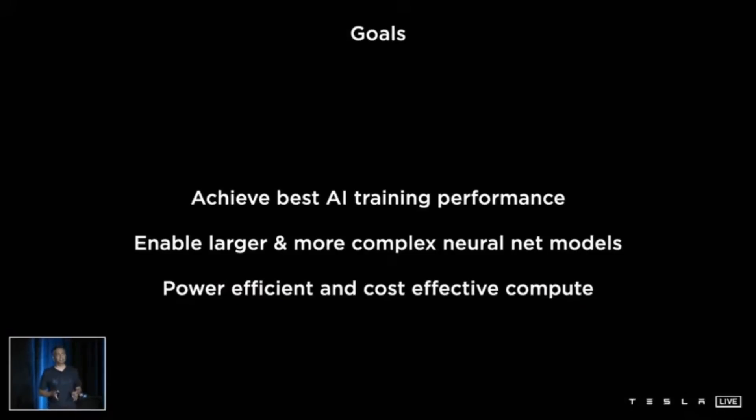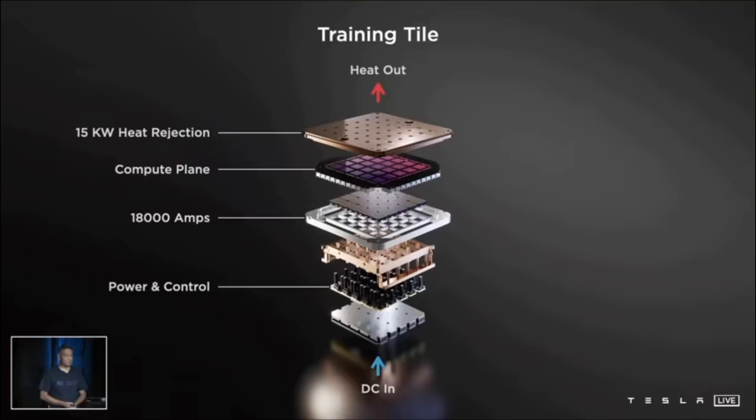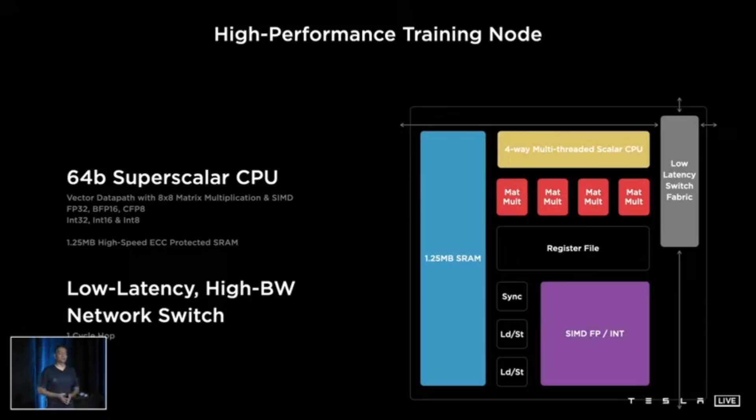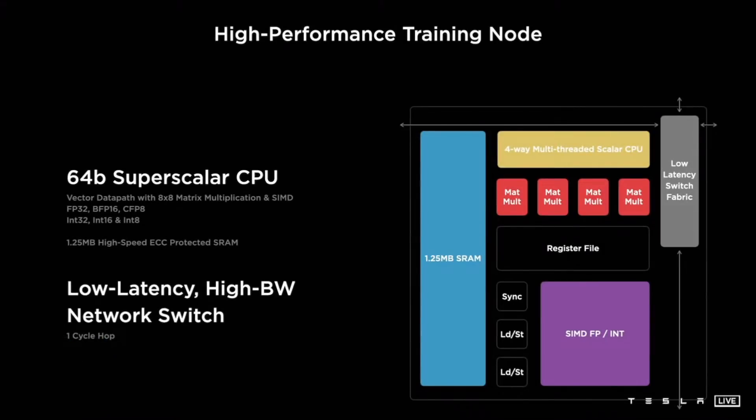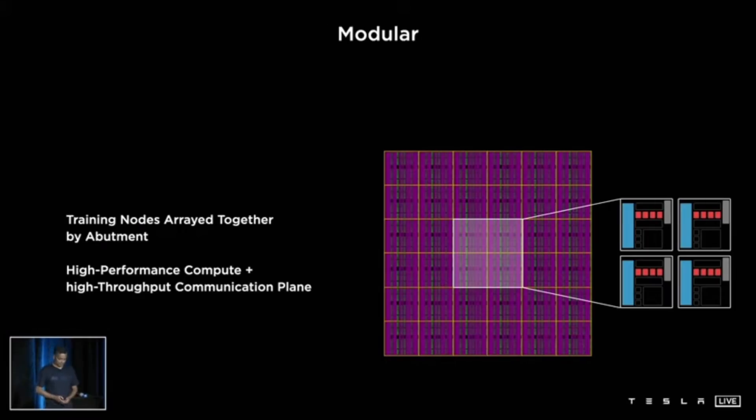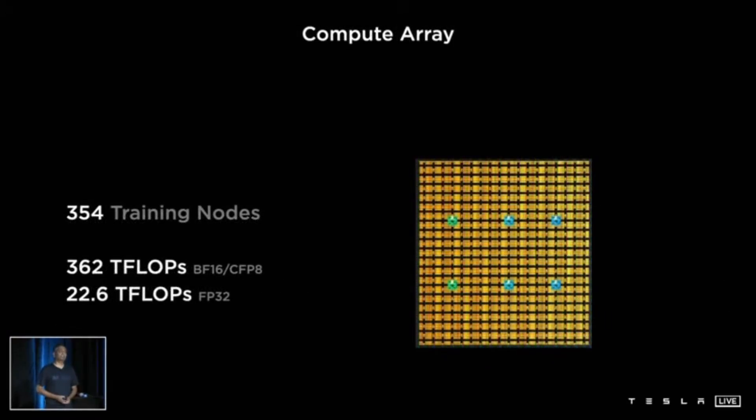But they showed how they made their new crazy chip from the bottom up. They started with these small training nodes that will be able to do a little over a teraflop of operations, and they are putting 354 nodes in a chip, making that chip capable of 362 teraflops—two times faster than the fastest chips out there.